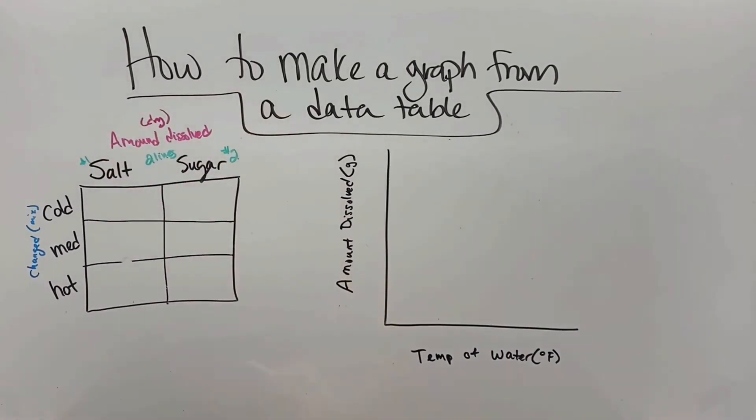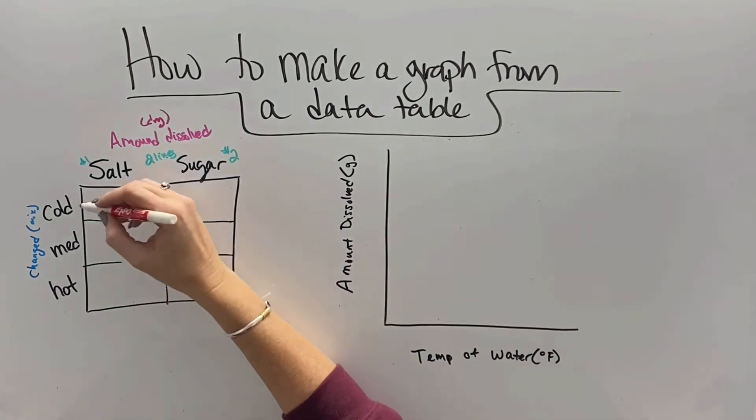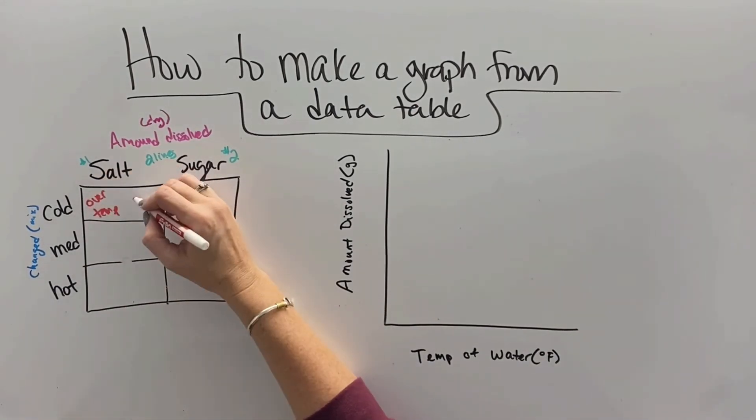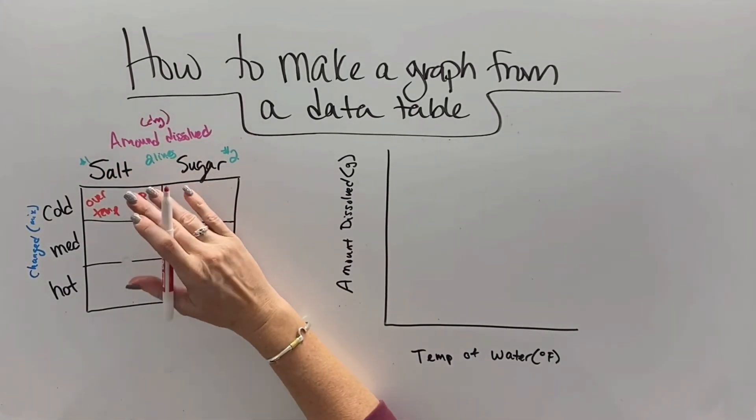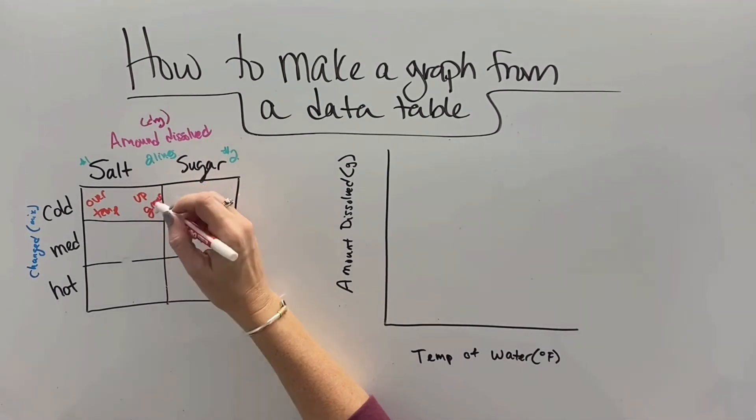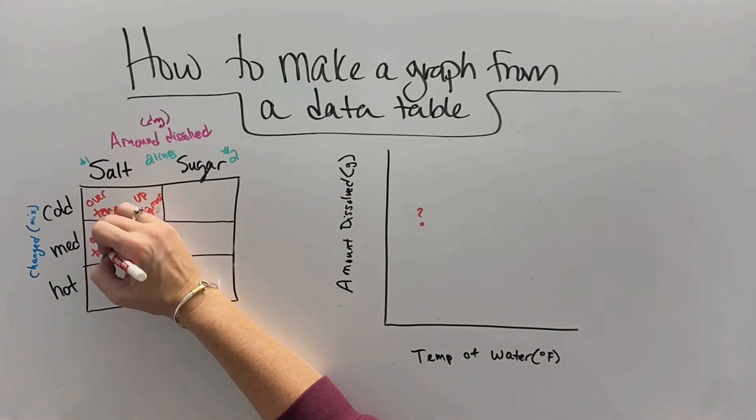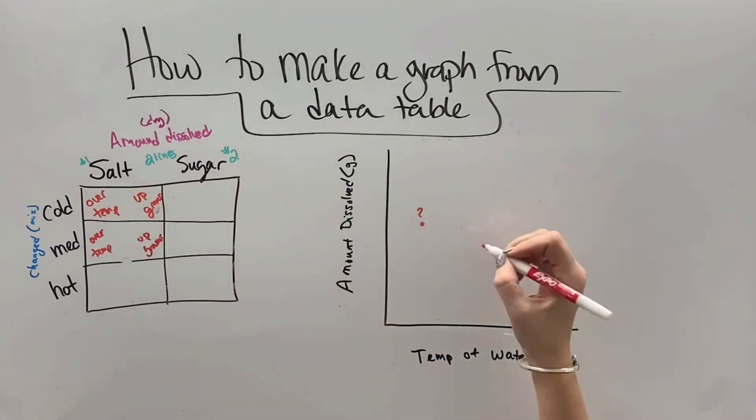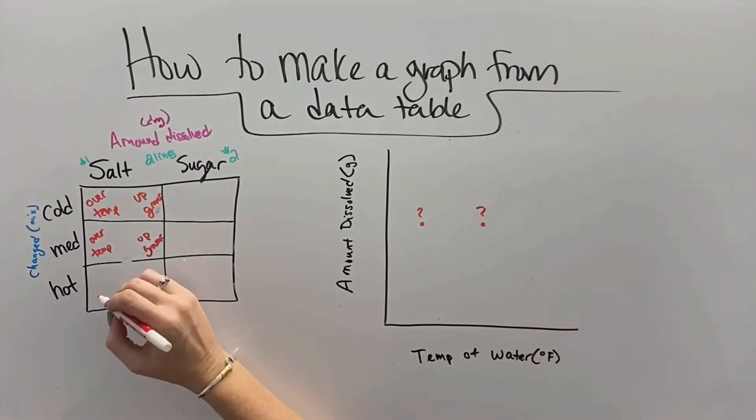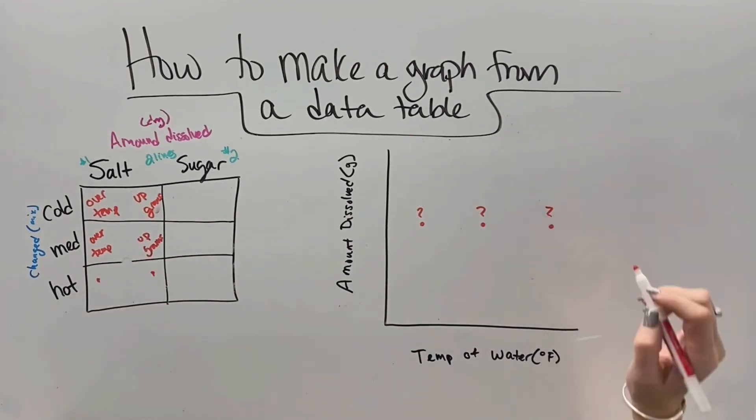What we're going to wind up with here are two separate lines that will each have three data points. And so for the salt line, we're going to go over by the cold temperature and up by the amount dissolved and draw a dot. Then we're going to go over by the medium temperature and up by the amount dissolved and draw a dot. So we're going to wind up with three different dots.